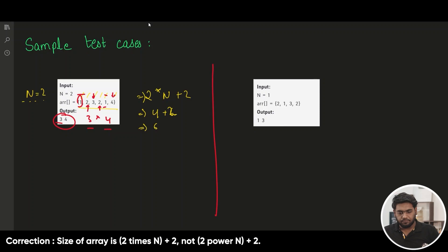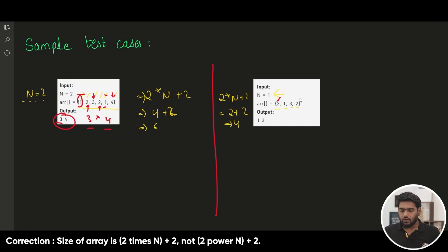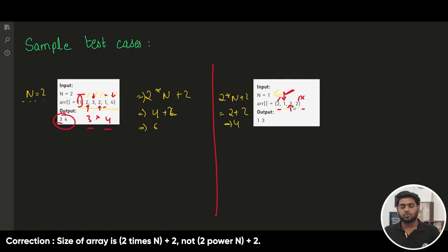Looking at the second example, we have n to be 1. Using the same formula, this time we have 4 values: 2, 1, 3, 2. Here, this 2 pairs with the other 2 so it's not included. But 1 is distinct and does not have any pair, so it's included in the answer. Same goes with 3. So 1 and 3 are the distinct values and we have to return them as the answer.